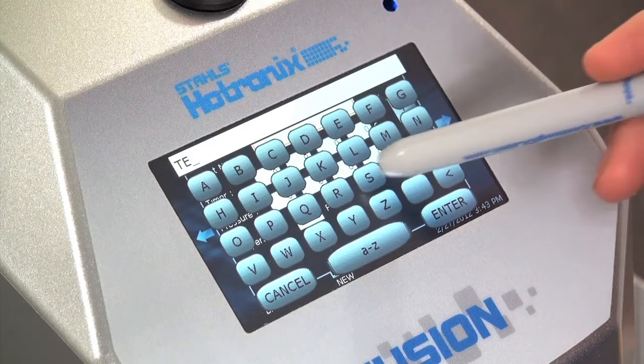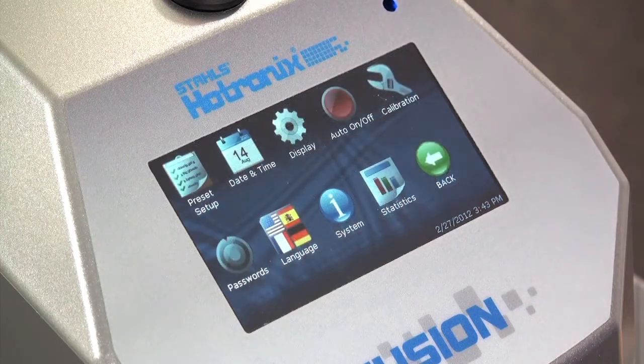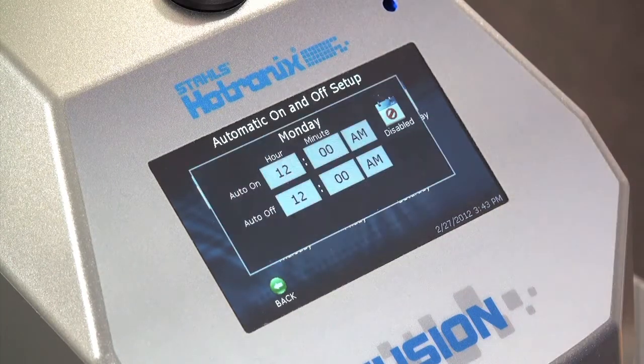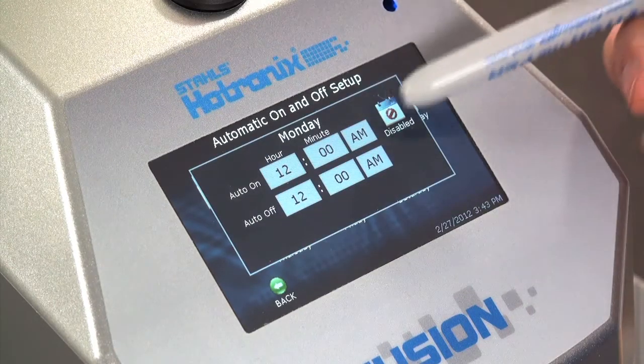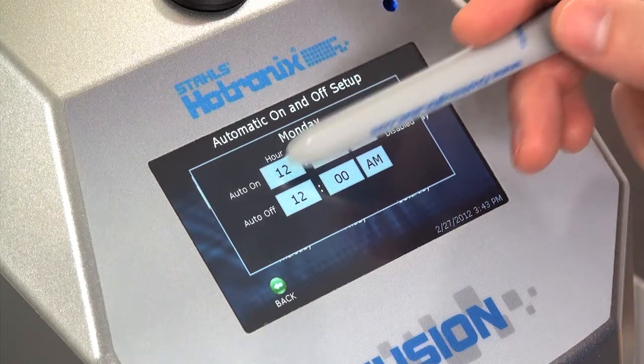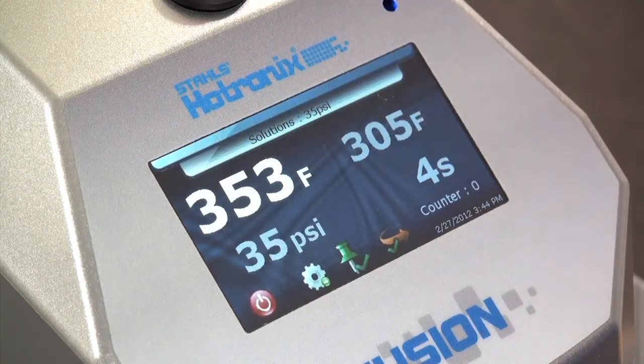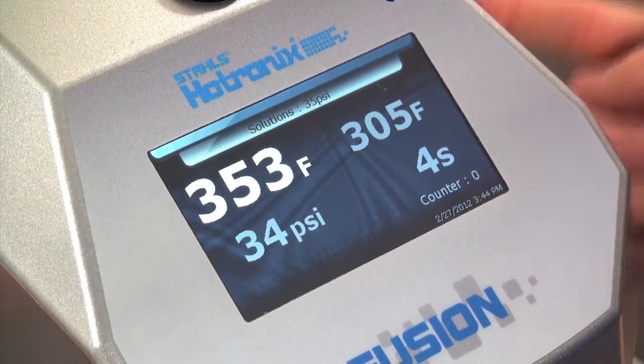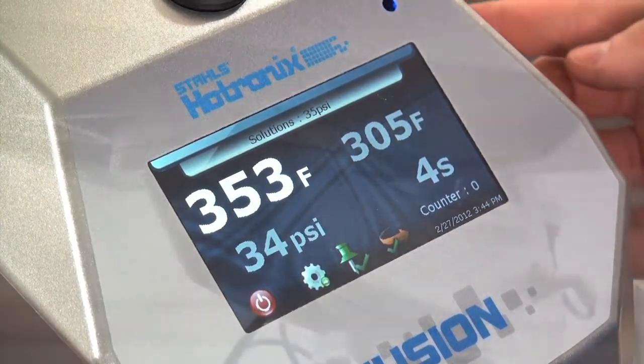Enter your own presets. Count the number of applications on the machine. Program it to come on in the morning and turn off by night, by day of the week. Or program an energy saving customizable sleep mode. A push button instant tack mode. This is a quick highlight reel of all the air fusion's innovative control panel has to offer.